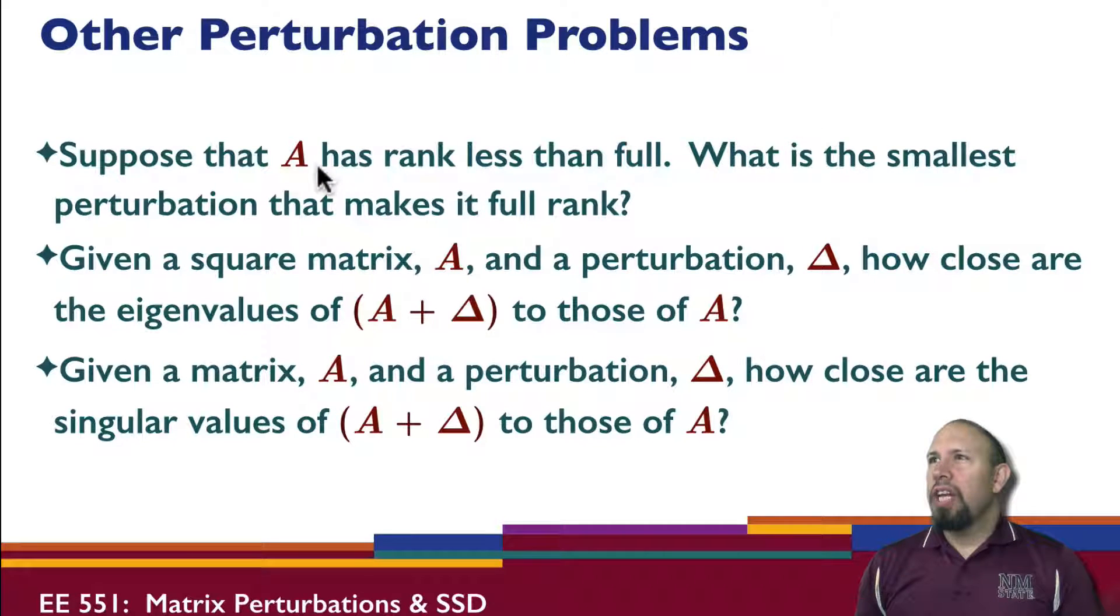Suppose now that A has rank less than full. What is the smallest perturbation that makes it full rank? It's kind of the opposite problem. Here are some other problems. Given a square matrix A and a perturbation delta, how close are the eigenvalues of A plus delta to those of A? This is a little bit different problem. This is an eigenvalue problem.